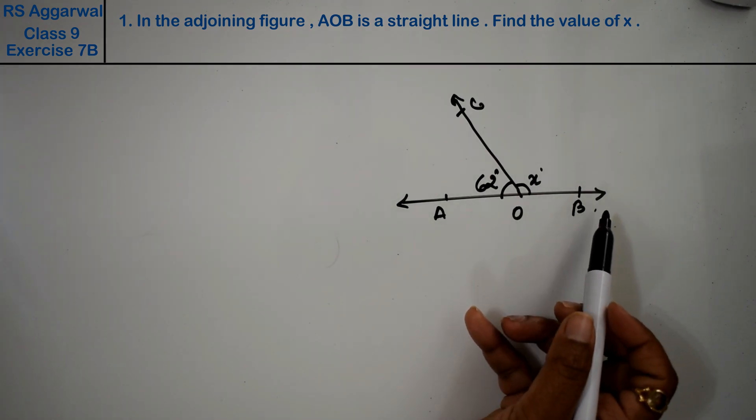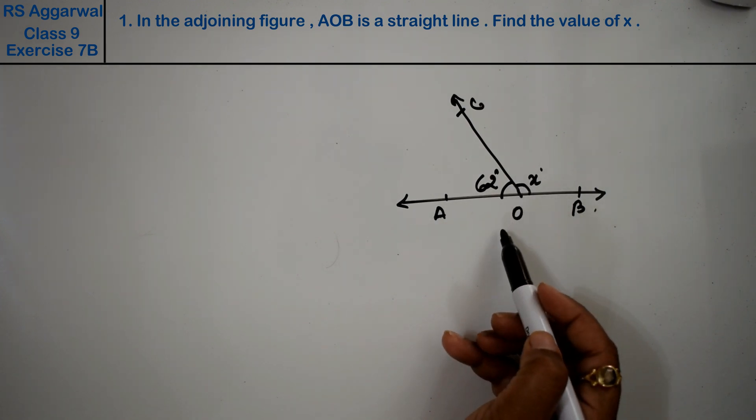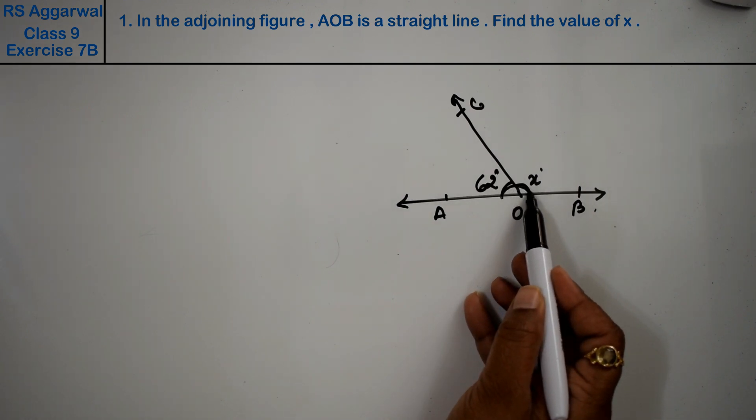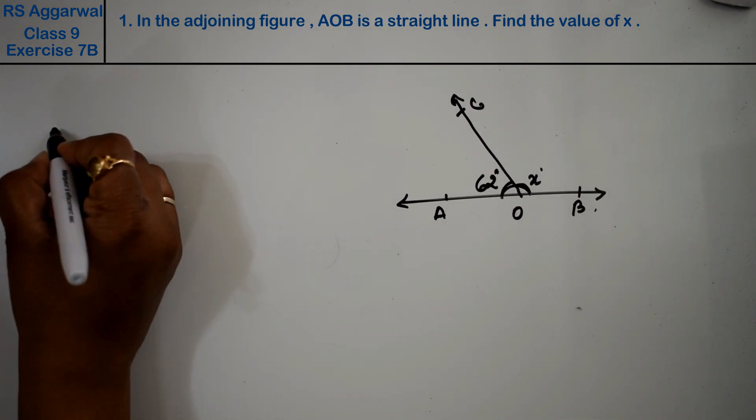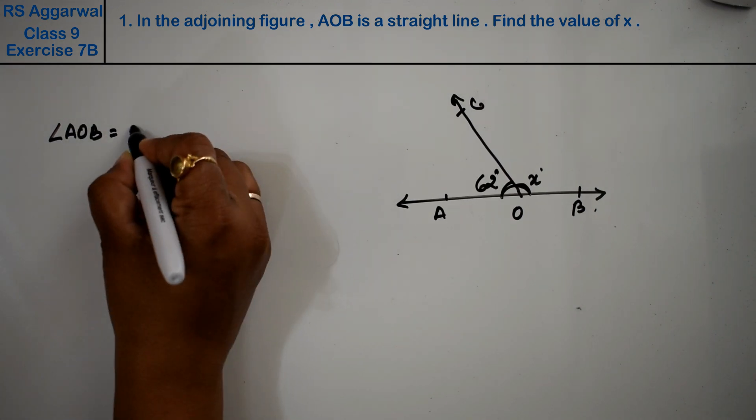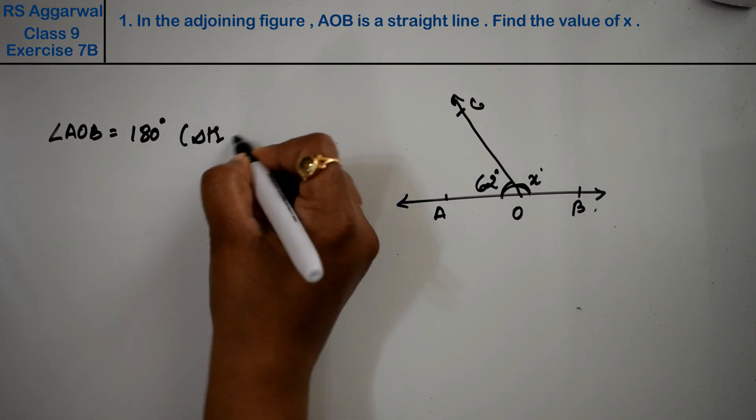Find the value of x. Friends, if AOB is a straight line, we need to find the value of x. We know that a straight line's total angle is 180 degrees, so angle AOB equals 180 degrees because of the straight line theorem.